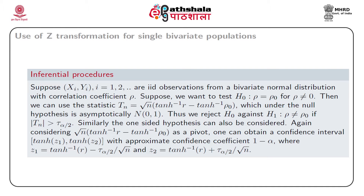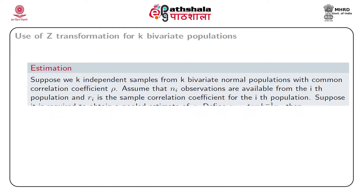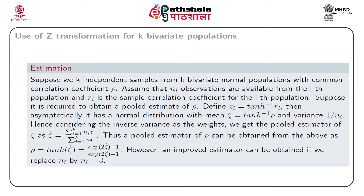It should be mentioned that if rho-naught is 0, one can perform a test for rho equal to 0, that is a test for independence, using the t statistic. Next, consider estimation: suppose we have k independent samples from k bivariate normal populations with common correlation coefficient rho. Assume that n_i observations are available from the i-th population and r_i is the sample correlation coefficient for the i-th population. We require a pooled estimate of rho.